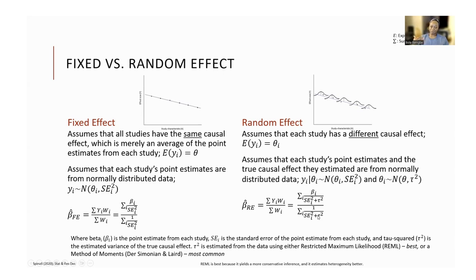Let me talk about the inverse variance method. The weight is assigned using the inverse of the standard error. For the fixed effect meta-analysis, studies with smaller standard errors — usually larger studies — get more weight because they are assumed to be more reliable. The smaller the 95% confidence interval, the higher the reliability of the estimate typically. So studies with smaller standard errors tend to be assigned higher weight in the fixed effects meta-analysis.